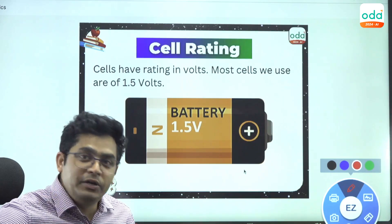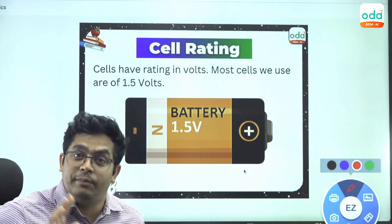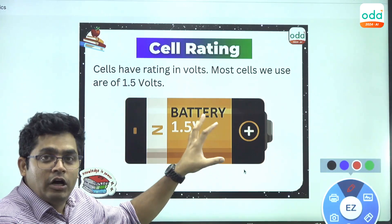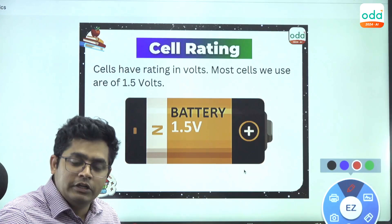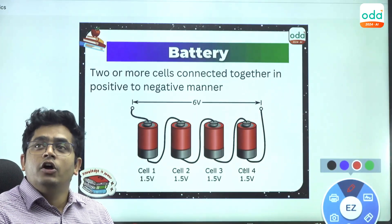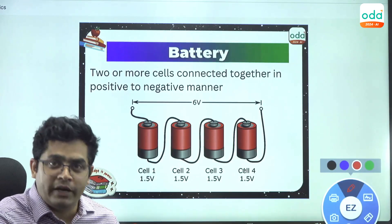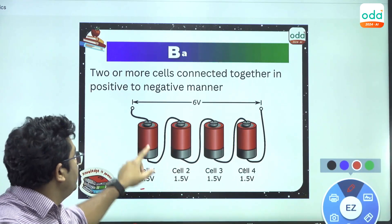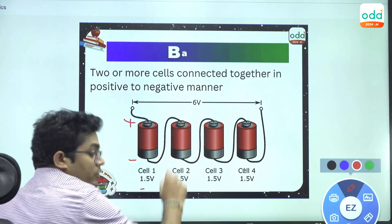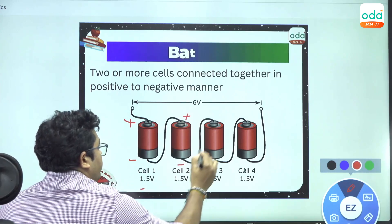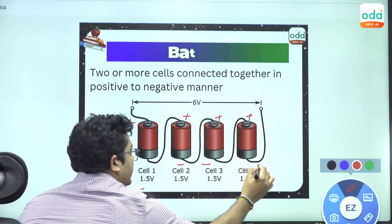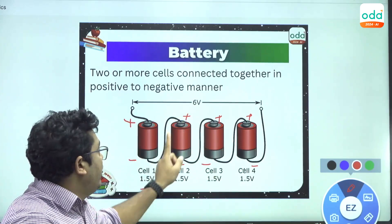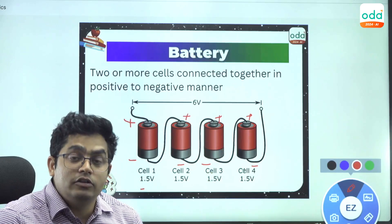Never say that cells produce charge — they don't produce charge. They simply push the charge; they provide the energy to the circuit. When two or more cells are connected together we call it a battery. In a battery, cells are connected in a positive-to-negative manner. Each cell has 1.5 volt, and when connected positive to negative, we can add all the voltages. For example, four cells connected this way give us 6 volt: 1.5 + 1.5 + 1.5 + 1.5 = 6 volt.